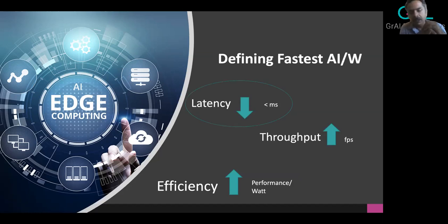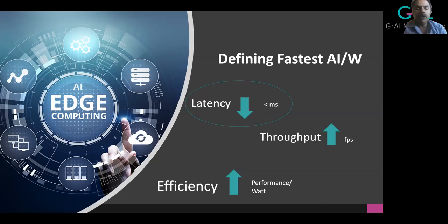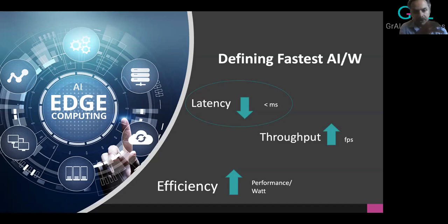Let's also define fastest AI per watt. When we at GrayMatter Labs look at fastest AI, we refer to latency — the time it takes for an inference from an input frame to an output. We want to minimize this latency. Even though systems may offer very high throughput in frames per second, they may not offer the lowest possible latency. We want to offer low latency with very high efficiency — that's what we mean by performance per watt. Our objective is to maximize performance by lowering latency per unit watt of energy consumed.